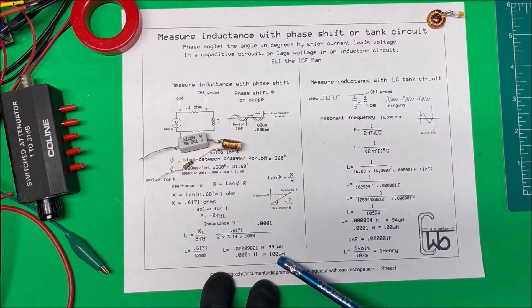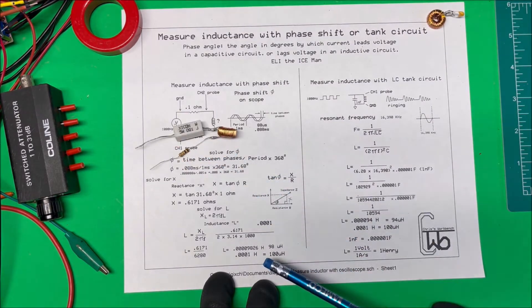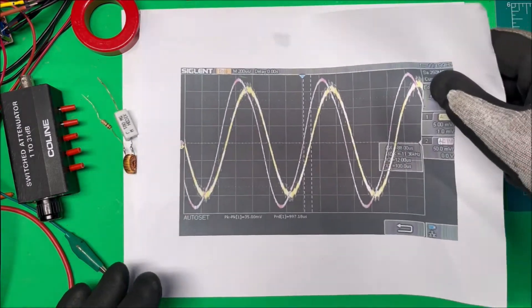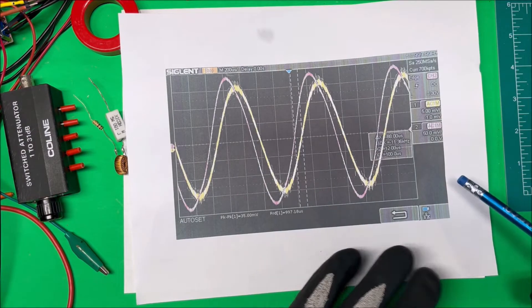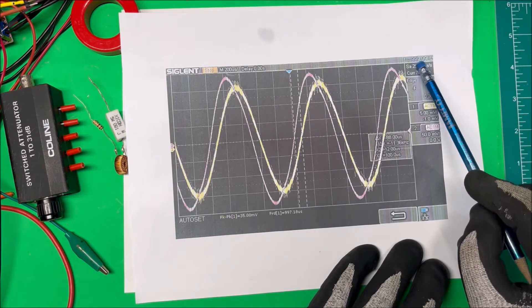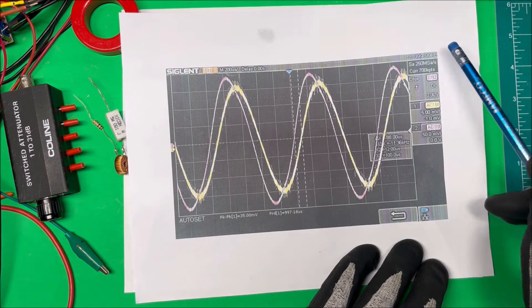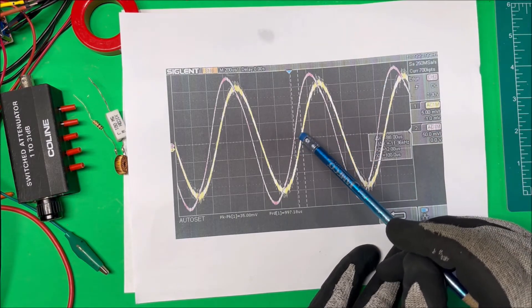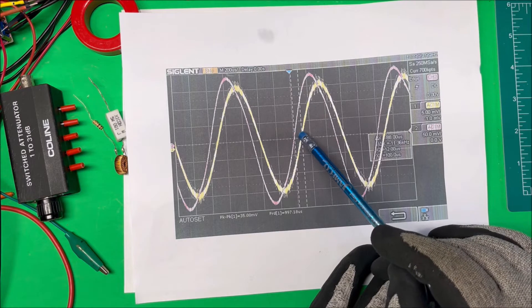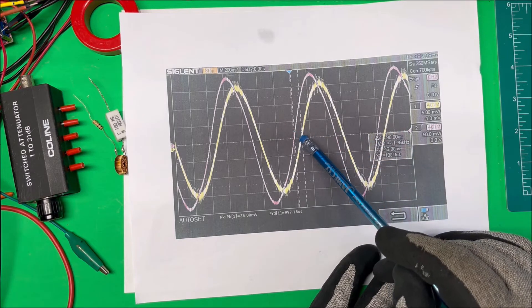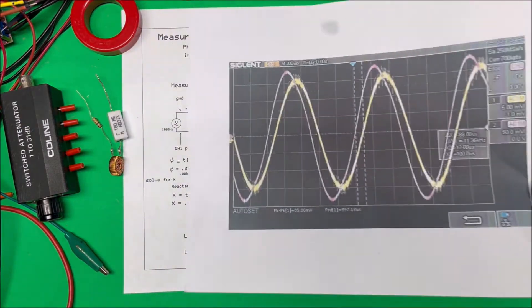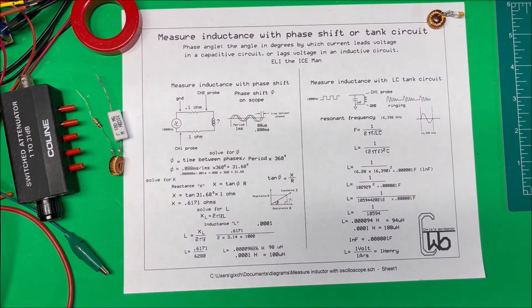Here it is on the scope. Here's our two sine waves at one kilohertz. I put the two cursors in here and it says that it's 88 microseconds, which is 0.088 milliseconds. With these two cursors we can tell the time between the two phases.